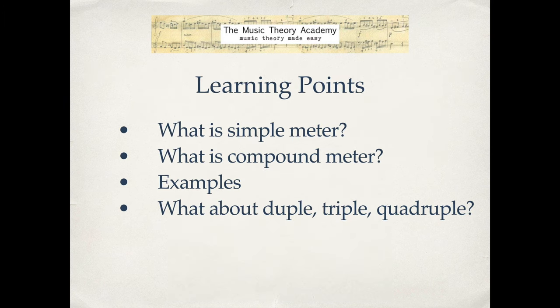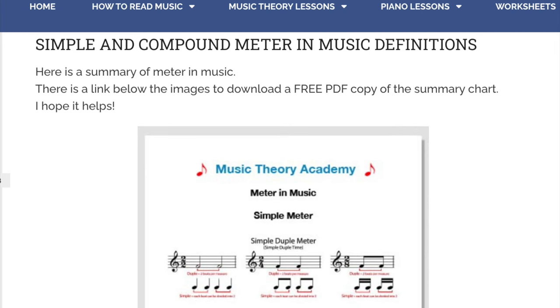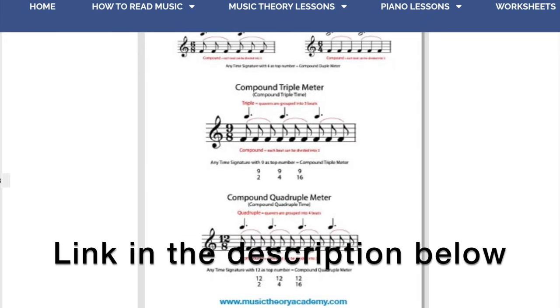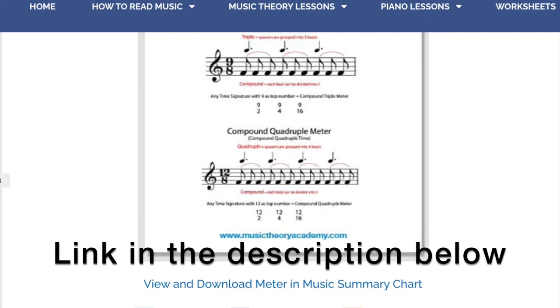So that's a quick tour of simple and compound meter. Simple meter: the beats can be divided into two. Compound meter: the beats can be divided into three. And duple, triple, quadruple simply describes how many beats there are in the bar. Head over to musictheoryacademy.com where I've got a free summary sheet you can print off and refer to — hopefully that will help with your understanding of this.